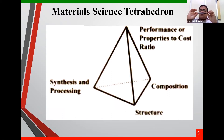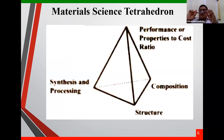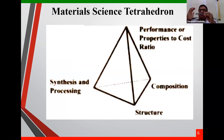Let us take a shaft as an example. It has to take some load — let's say 400 MPa stress will develop because of the load applied. It has to take this load. When you want the shaft to take this load, you select a material. The performance of this material — its load-taking capability — where does that come from? It comes from the properties of the material. The load-taking capability of the shaft comes from the properties of the material.